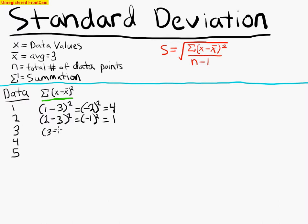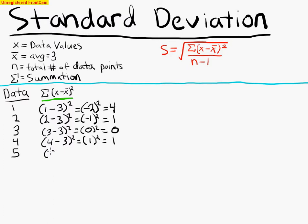3 minus 3 squared equals 0 squared, which is 0. And we continue this for the remaining values, all resulting in 0 squared. The last value equals 4.